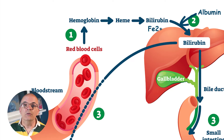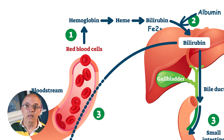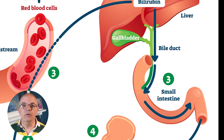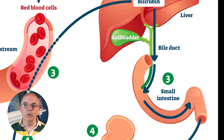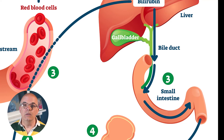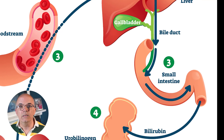In the liver there are also Kupffer cells which will break down hemoglobin with the same result. When in the liver, the unconjugated bilirubin is converted into conjugated bilirubin through a reaction with glucuronic acid. Conjugated bilirubin is water soluble and is then excreted by the liver as bile via the bile duct and into the small intestine.